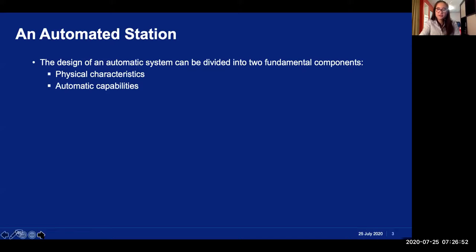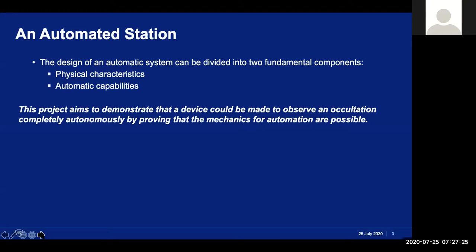And then the second component is the actual autonomous nature of the technology, what it is about the system which actually makes it automatic. The system needs to be able to go through the entire observation process, start to finish without receiving any sort of additional input from a person. This second component, the actual automation, is a bit less straightforward to implement than the first. In fact, when I was first approaching the problem, I wasn't even sure if it was going to be possible. So I focused this year on that second component, whether or not it is possible to conduct an observation entirely autonomously. And if so, how one might approach that problem. If I could prove that it is possible to achieve that goal, then that would justify further investigation into the first component.